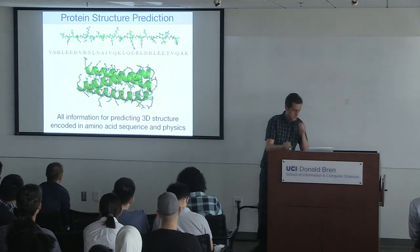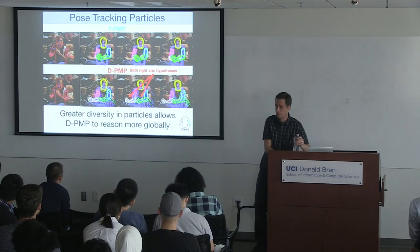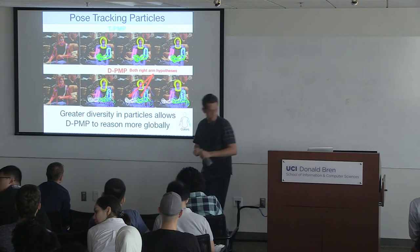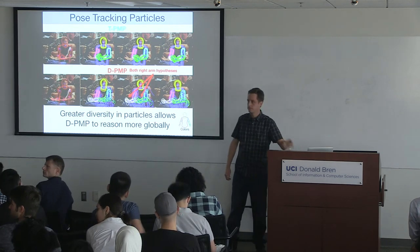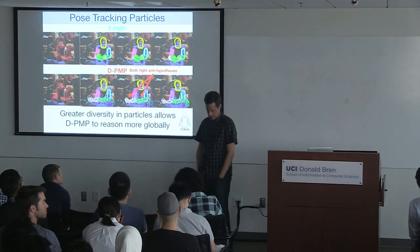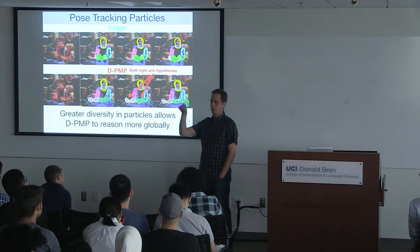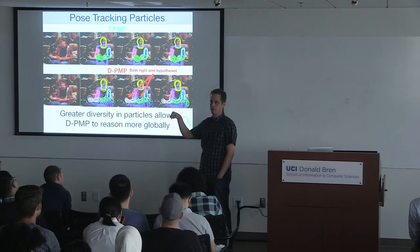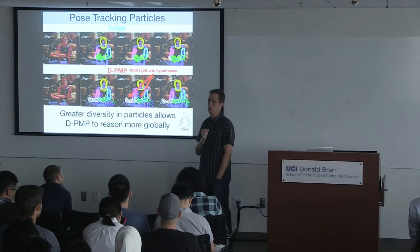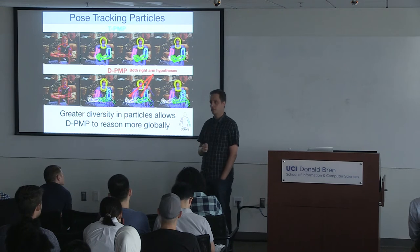Regarding how multiple people are handled: our model is a single-person model. When given a sequence with multiple people, those multiple people appear as multiple modes of the posterior distribution. We implicitly get multiple people by finding those multiple modes. It's not an explicit multi-person model — you could build one, but that complicates other things in various ways.